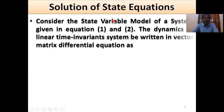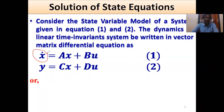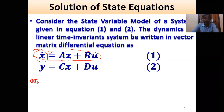Solution of state equations. Consider the state variable model of a system given in equations 1 and 2. The dynamics of a linear time-invariant system will be written in vector matrix differential equation form. This is equation number 1 and equation number 2. The left-hand side has x-dot — only differentiation terms — and the right-hand side is free of differentiation terms. This type of equation is called the state equation.